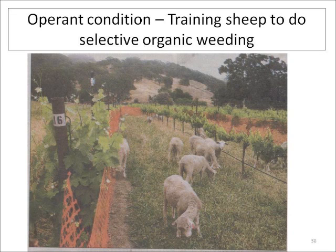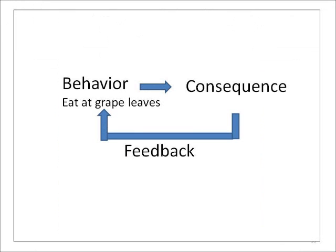In an experiment conducted at the University of California in Mendocino, sheep were allowed to eat vine leaves, then received lithium chloride, which creates a mild and unpleasant stomach sensation. These sheep avoided eating grape leaves in future grazing times. This is an example of punishment.